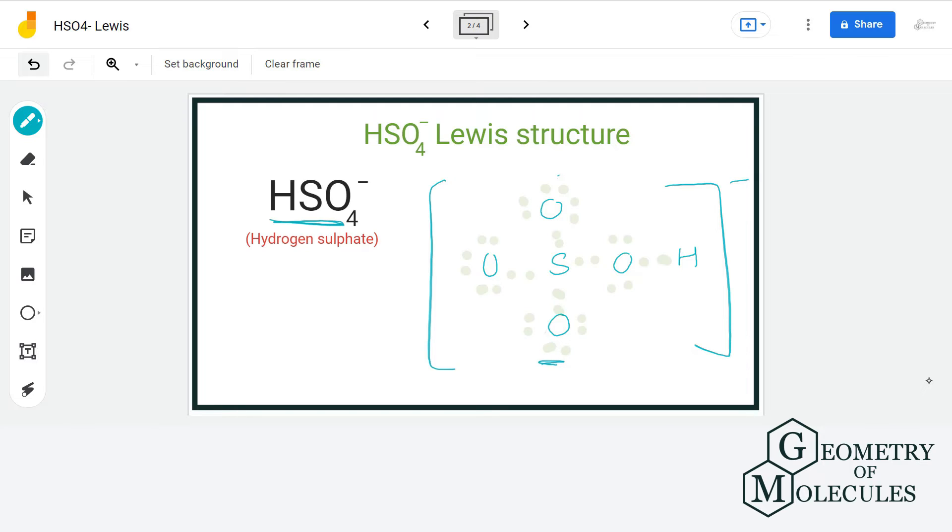For oxygen, we have 6 valence electrons minus 6 non-bonding electrons minus 2 bonding electrons divided by 2. That will give us a formal charge of minus 1. For this oxygen which is connected to hydrogen, we have 6 valence electrons minus 4 non-bonding electrons minus 4 bonding electrons divided by 2. That will give us a formal charge of 0.